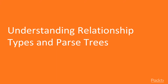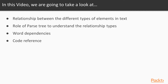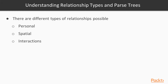In this video, we are going to learn about the relationships between different types of elements in text and the role that parse trees play in helping us understand these relationships. We're also going to look at things like word dependencies and co-reference. There are many different types of relationships possible. The first is personal — for example, the son of Steve is Bob, or the aunt of Mary is June. These personal relationships are typically useful when finding relationships between individuals in a text.